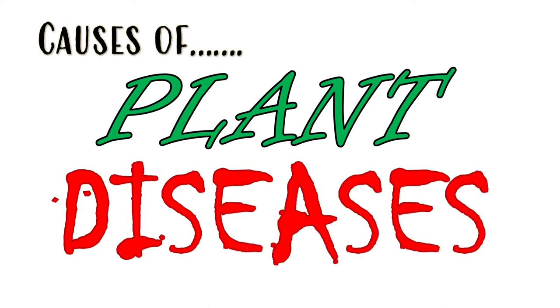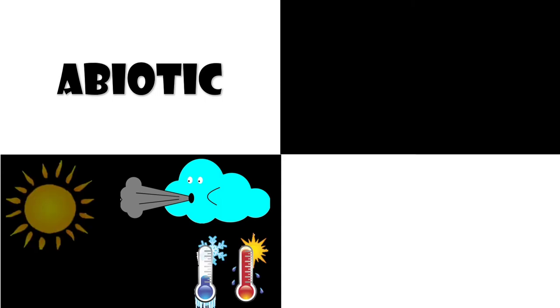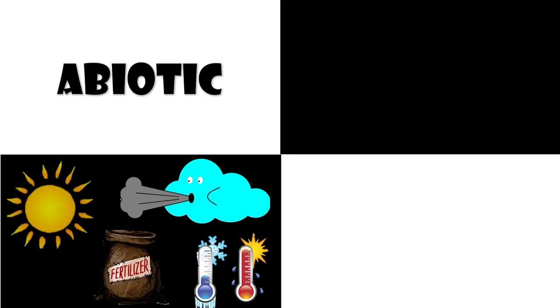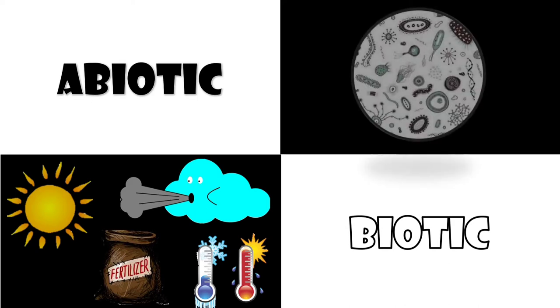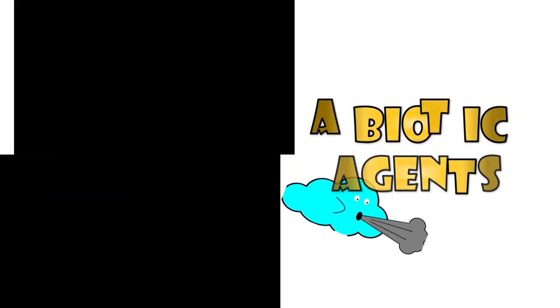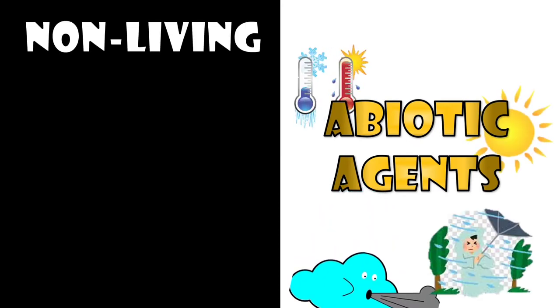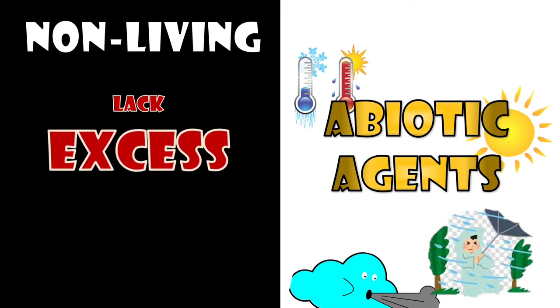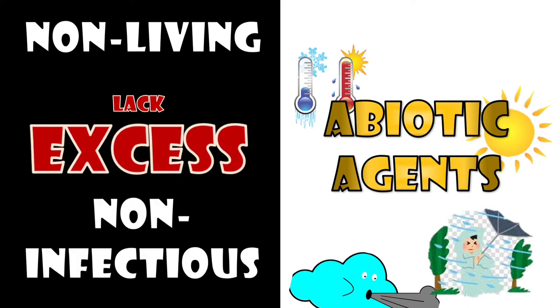On our previous video, we defined plant diseases as any disturbance that prevents the normal development of plants. These disturbances are caused by either abiotic or biotic agents. Abiotic agents are environmental factors such as air pollutants, temperature, solar radiation, etc., that result in changes in form and function of the plant. Biotic agents are microorganisms or parasitic plants. Abiotic causes of plant diseases are non-living agents, and the disease is usually caused by the lack or excess of something that supports the normal functioning of plants and is not infectious. For the next slides, we will be talking about the different abiotic agents that cause plant diseases.